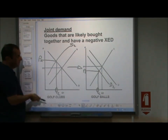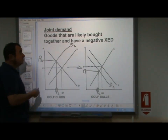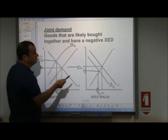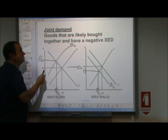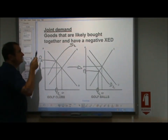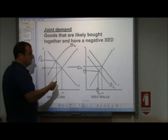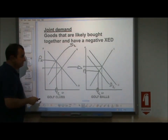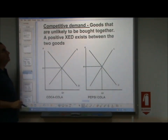Fewer people were buying golf clubs and so fewer people wanted to buy golf balls, because these are in joint demand — they are goods that are complements to each other. That's a pretty straightforward one. Let's go on to the next one.